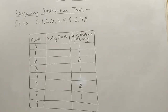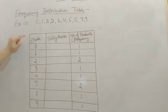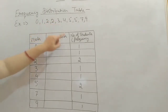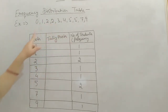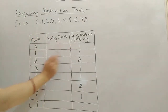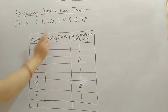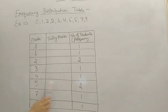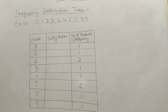Next is frequency distribution table. A table which shows the frequency of each observation is called a frequency distribution table. Here I have taken the 10 students' marks. We draw a table with three columns: marks, tally marks, and number of students — which we can also call frequency. So: 0 marks — 1 student, 1 mark — 1 student, 2 marks — 2 students, 3 marks — 1 student, 4 marks — 1 student, 5 marks — 2 students, 7 marks — 1 student, 9 marks — 1 student. After this we represent it as tally marks also — with the help of lines.